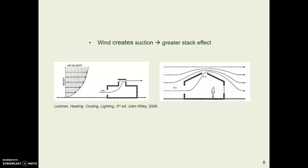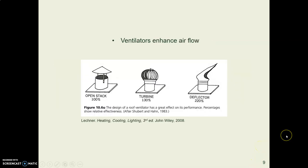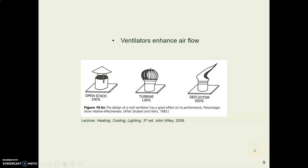As wind blows across the top of a building, it creates suction and increases the stack effect. This means you can use various kinds of ventilators to help pull air through the top. The kind that does the best job has a hood facing one direction, and it rotates in response to the direction the wind is blowing.